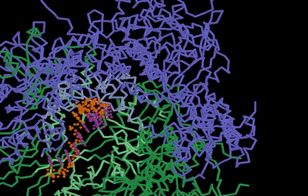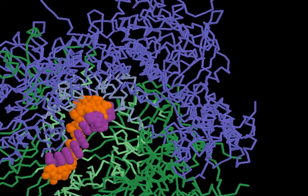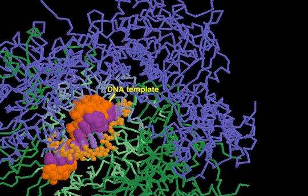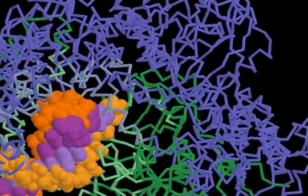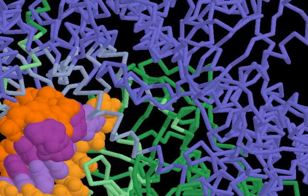In this structure, a short stretch of a DNA-RNA heteroduplex was co-crystallized. New nucleotides would be continually added to the 3' hydroxyl group of the RNA, shown in red.